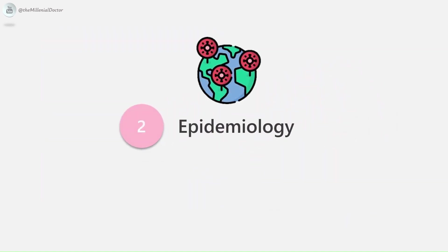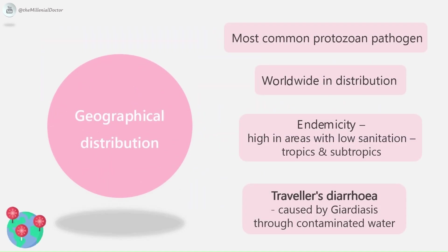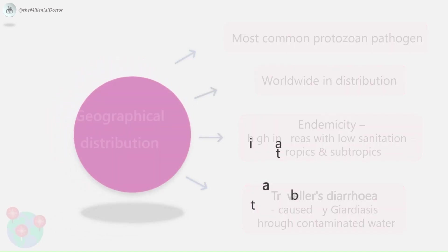Epidemiology: it is the most common protozoan pathogen and is worldwide in distribution. The endemicity of the parasite is very high in areas with low sanitation, especially tropics and subtropics. Visitors to such places frequently develop traveler's diarrhea caused by Giardia through contaminated water.